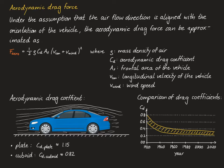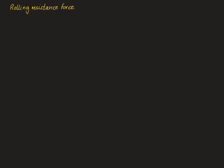Wind direction also influences the size of the aerodynamic force, so the assumption that the airflow direction is the same as the orientation of the vehicle is somewhat of a simplification. However, it is of course a good approximation for many situations in reality. Next, let's look in more detail at the rolling resistance forces generated by the tires of a vehicle.